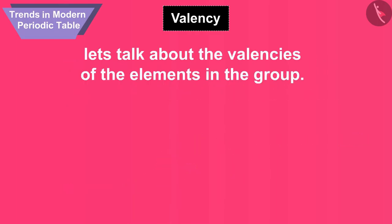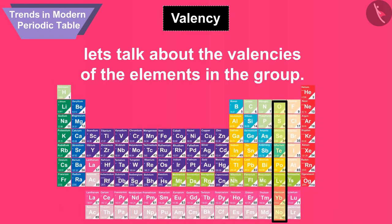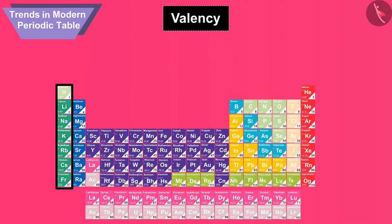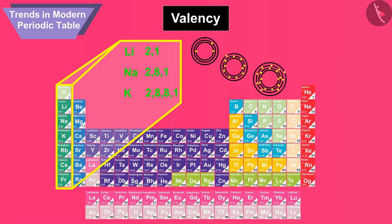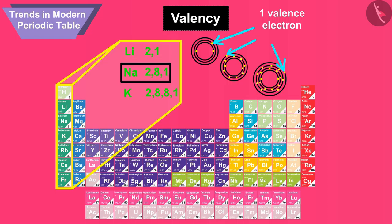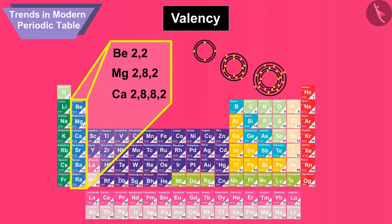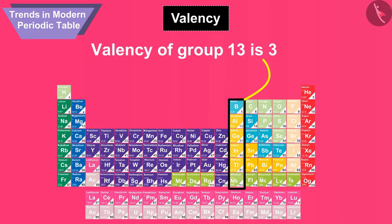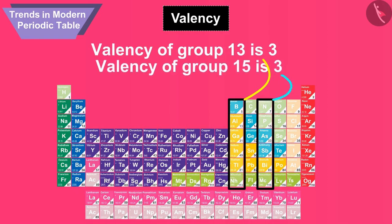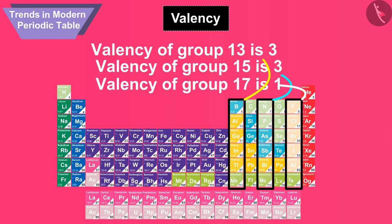Now let's talk about the valencies of the elements in the group. All the elements of a group have the same number of valence electrons. For example, all elements of group 1 like lithium, sodium, and potassium have one valence electron and therefore have valency equal to 1. All elements of group 2 have two valence electrons and hence valency is 2. Valency of group 13 is 3, valency of group 15 is 3, and valency of group 17 is 1.